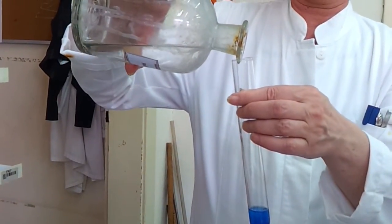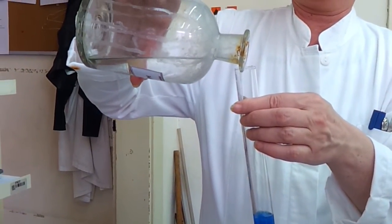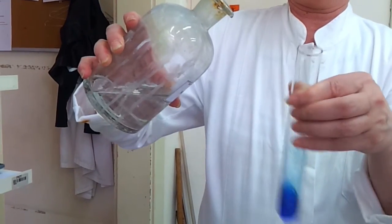Then we have to add an equal amount of Fehling's 2 solution and 0.2 mg of sugar.